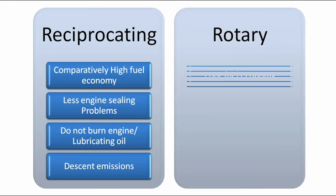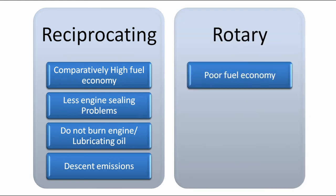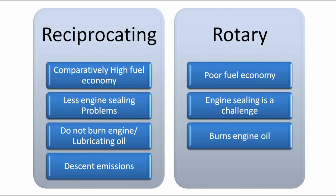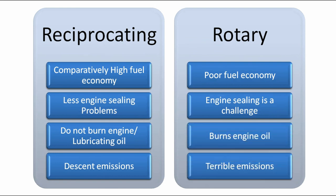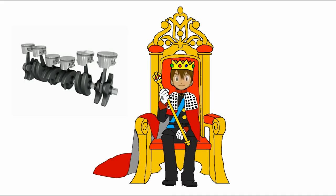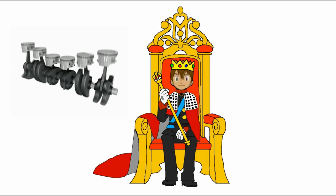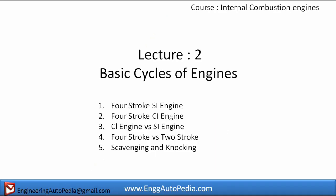Whereas in a rotary engine, there is poor fuel economy, engine sealing is a challenge, it burns engine oil, and produces terrible emissions. So the reciprocating internal combustion engine is the most widely used type in automobiles.